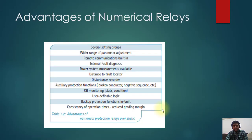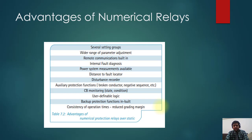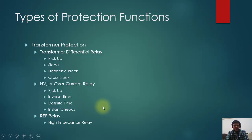Further advantages of numerical relays include several setting groups, a wider range of parameter adjustment, and remote communication capability because microprocessors are integrated — they have an interface for the latest automation systems. Numerical relays also have a built-in fault recorder, power system measurements always displayed, distance fault records, and a disturbance recorder. There are numerous functions and advantages.